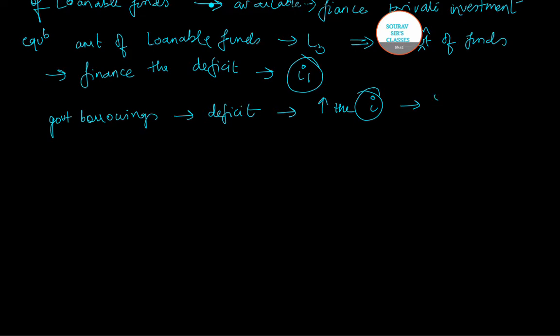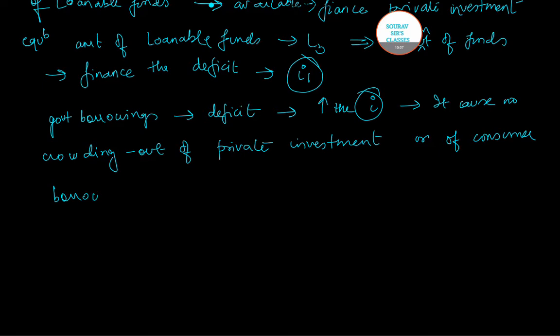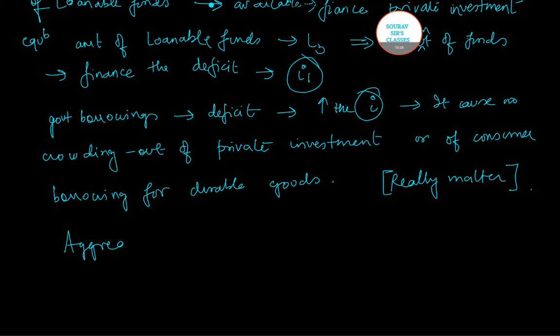Thus what we see is government borrowing to cover deficits does not increase the market interest rate given by i1. So what happens is that it causes no crowding out, as stated in the beginning. And now we can see from the diagram also there is no crowding out of private investment. And why there is no crowding out? Because the market interest rate remains unaffected. Government budgetary deficit and the consequence of borrowing does not really matter in this case.